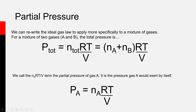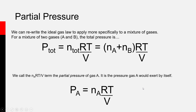What that really means is that we can assign a pressure to each gas in the mixture — a pressure due to gas A and a pressure due to gas B — based on the ideal gas law. The pressure exerted by gas A, which we call the partial pressure of gas A, is equal to the moles of A times R times T divided by V. Similarly, the partial pressure of B is equal to the moles of B times R times T divided by V.